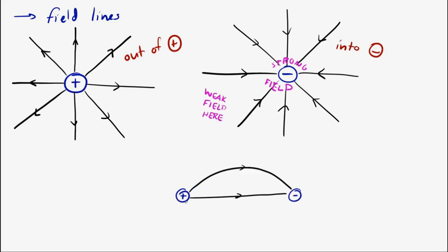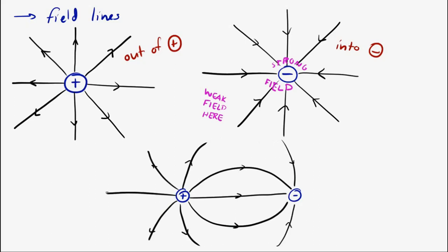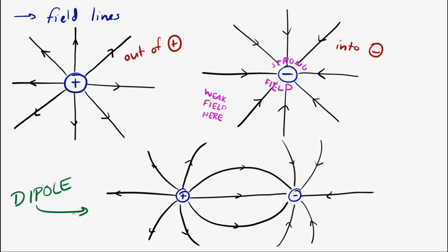I want to look at that positive-negative combination — a positive charge and a negative charge. The one I've drawn is for equal amounts of positive and negative charge, and this is called a dipole. Dipole means two opposite charges. If you look in an area where you're close to one of the charges, the field lines are close together, which means you have a strong field there. And if you go further from both of the charges, you'll see that the field lines are farther apart, meaning the field is weaker there.